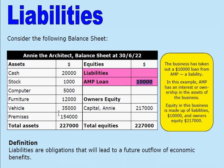Let's consider the term liabilities. This business has assets of $227,000, but on the equity side, we can see that there is a liability to the AMP for $10,000. This means this business has taken out a $10,000 loan from the AMP. That is a liability.